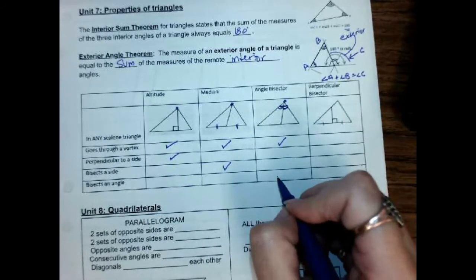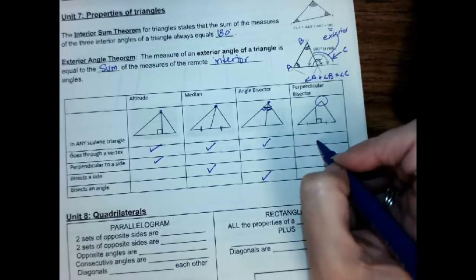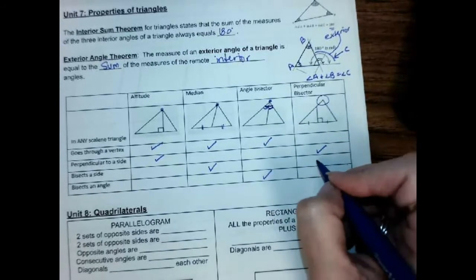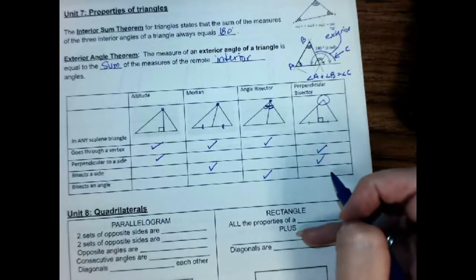And it bisects the angle. And then, the perpendicular bisector, that was the one that did not go through the vertex. It is perpendicular to a side. It does bisect the side. It's right in the name, bisector. And it doesn't even go through the angle, so it can't bisect the angle.